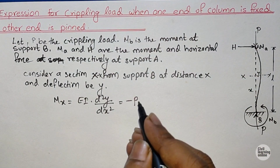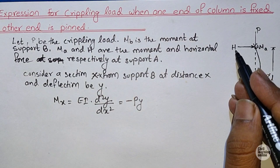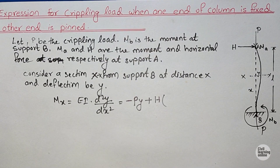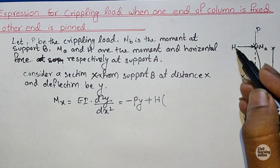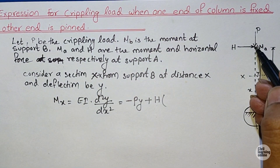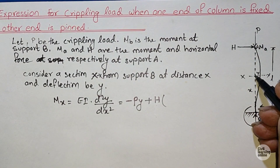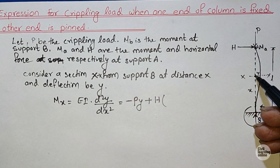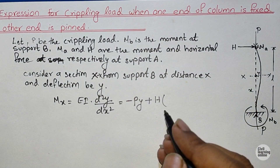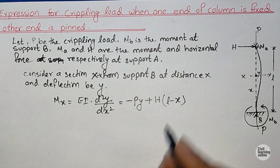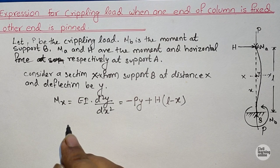The horizontal load H is also considered. The horizontal force acts at support A, and the perpendicular distance from support A to the point where we are finding deflection is (L minus X). So we will have H multiplied by (L minus X).